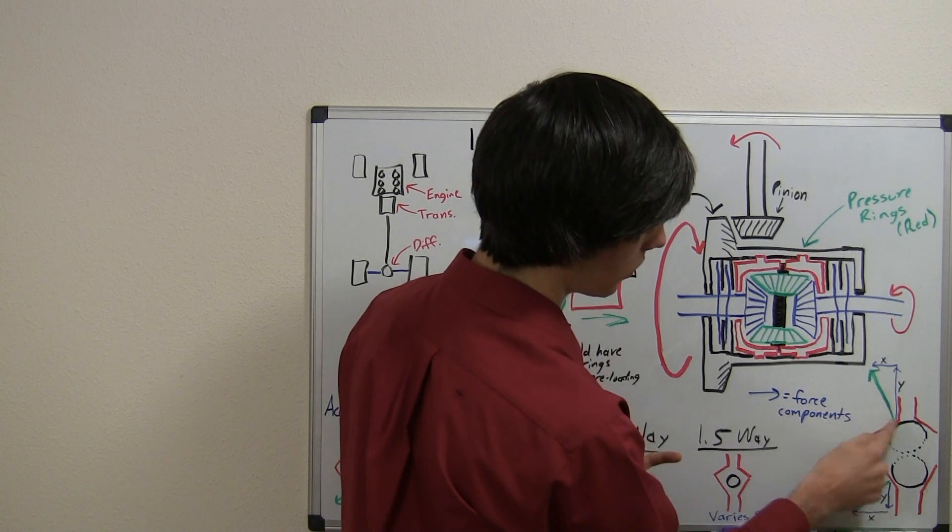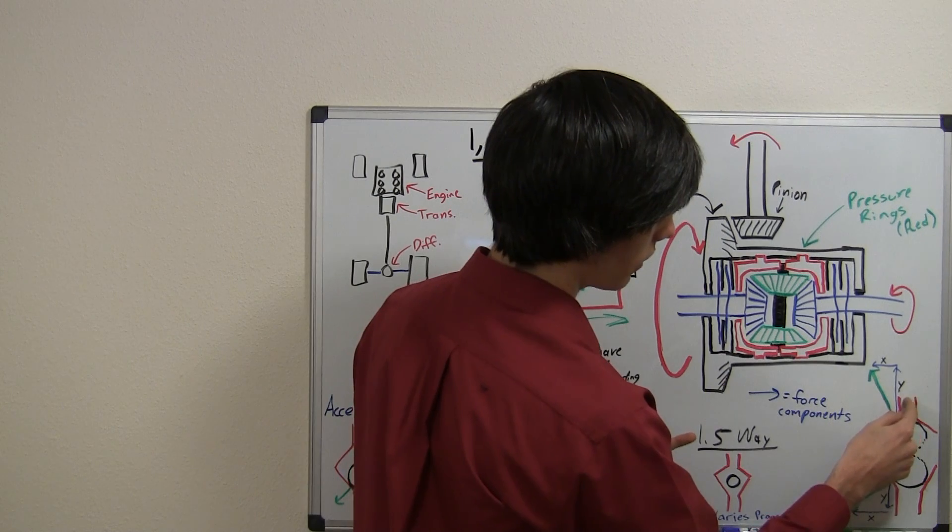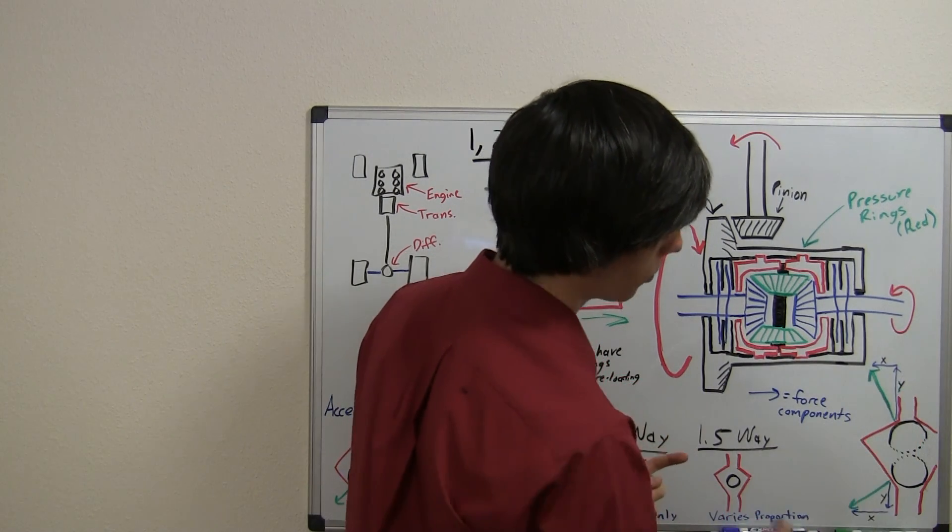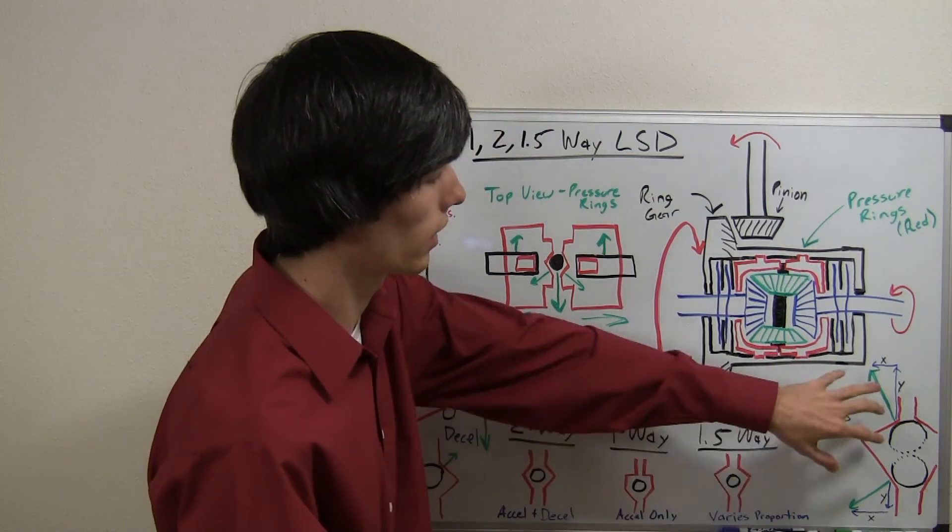So as you can see here, the normal force, the force that this is pushing against this pressure ring in the y, is much greater than the x. Where this is different, when you accelerate, the x is greater than the y. And so that allows it to act kind of like a one-way, but also kind of like a two-way.